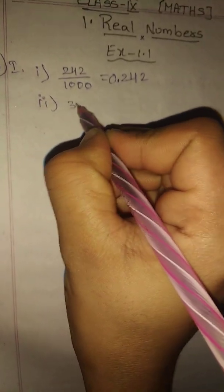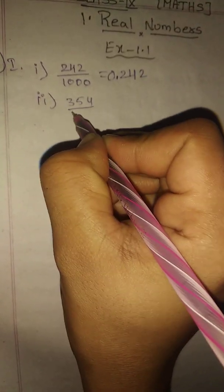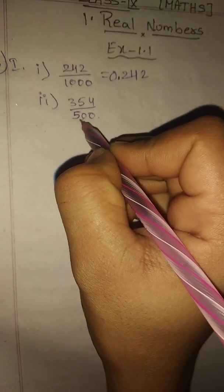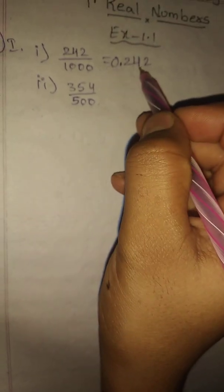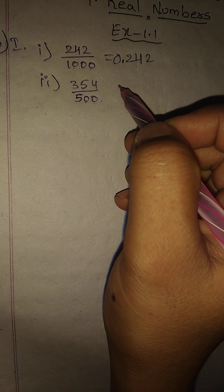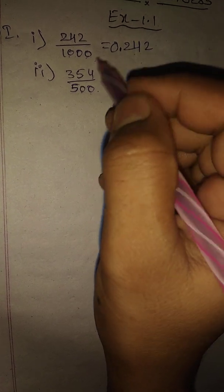Second one: 354 divided by 500. The denominator is 500, not directly a power of ten like 1000. Since it is not in thousands or hundreds directly, we need to convert it. We should multiply both numerator and denominator to make the denominator a power of ten.